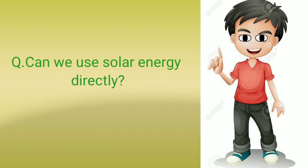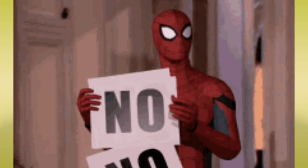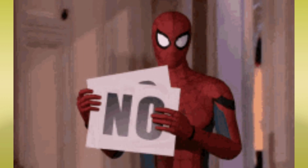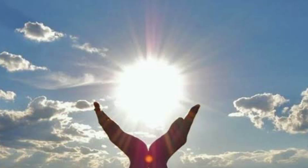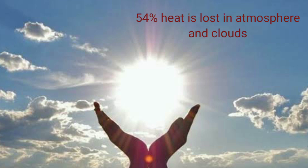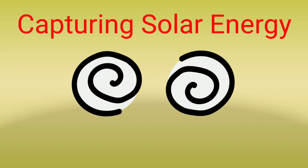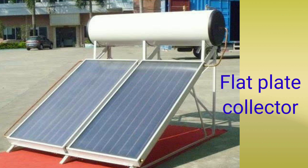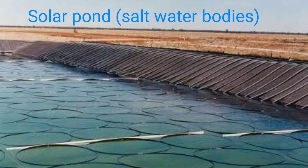Can we use solar energy directly as it is to convert into electrical or thermal energy? No, we can't — because sun radiation is diffusely spreading across the Earth, and almost 54% of heat is lost due to the Earth's atmosphere and clouds.